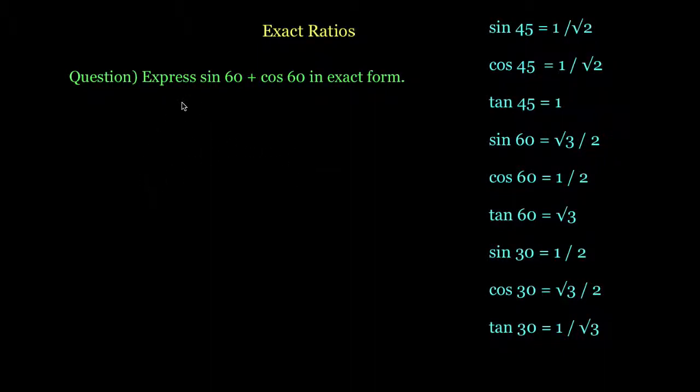If we tried using our calculators to express sin 60 plus cos 60 in exact form, we'd have a hard time. Right now if we type sin 60 into our calculator and press equals, it gives us 0.866, and those numbers go on forever because it's an irrational number.